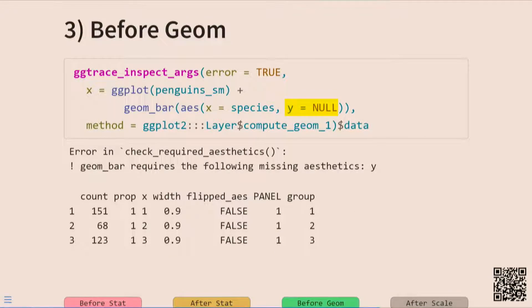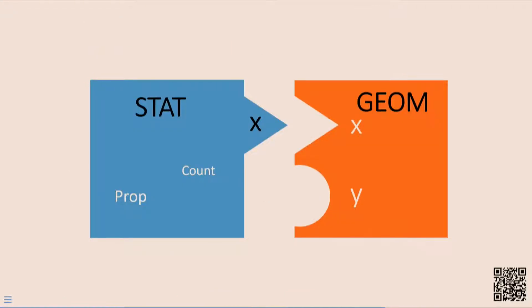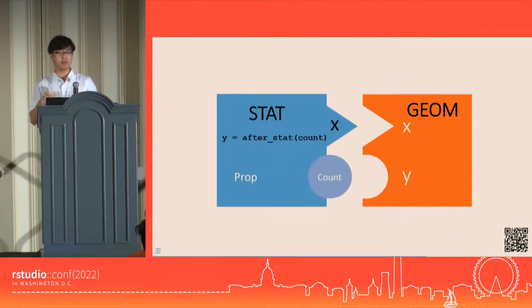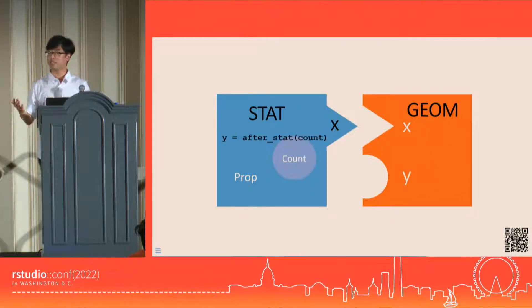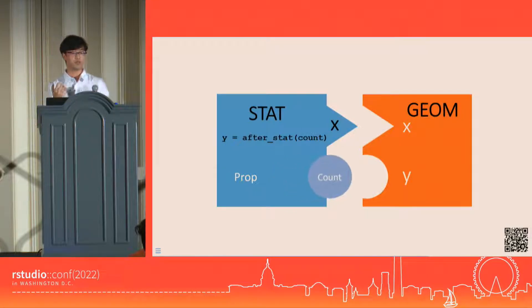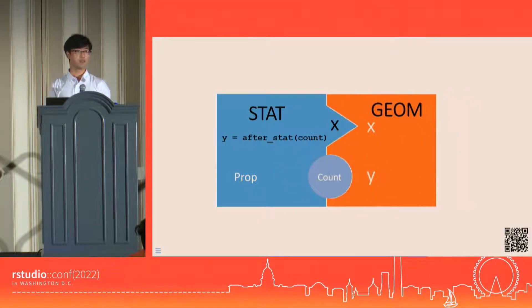If we instead override this default and not map anything to y at all by setting it to null, then the stat is satisfied, but the geom down the line is not, so it's geom_bar that throws the error. Conceptually, we can see how after stat mappings are sometimes necessary to make a stat and a geom work. Every layer has a stat and a geom, and they need to fit together to make a layer come to life.